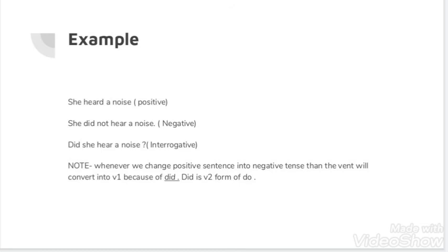I am giving you some other examples. Like, they ran fast. 'Run' second form will be 'ran'. They ran fast. If we have to make it negative: they did not run fast.